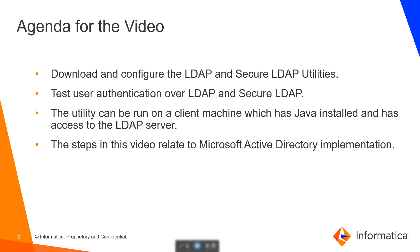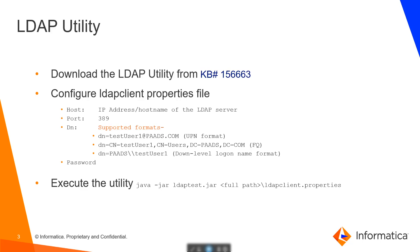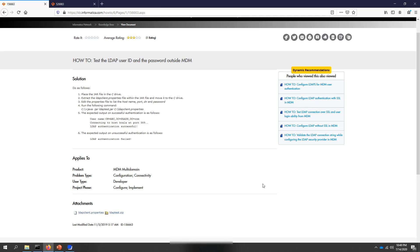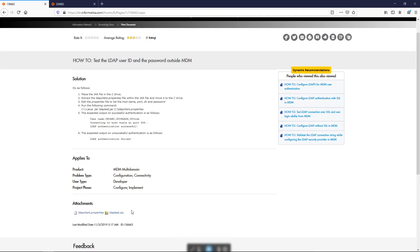The steps in this video are related to Microsoft Active Directory server. Let's look at the LDAP utility. This utility can be used if SSL is not enabled on the LDAP server. The utility can be downloaded from this KB. As you can see, this KB has the following attachments.